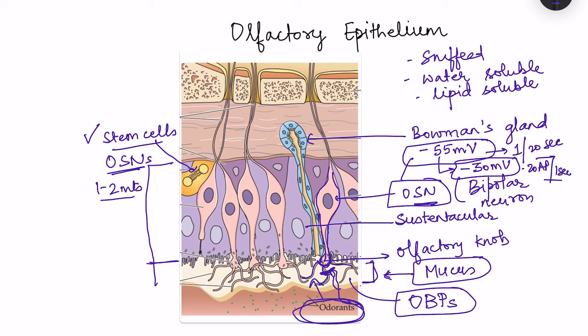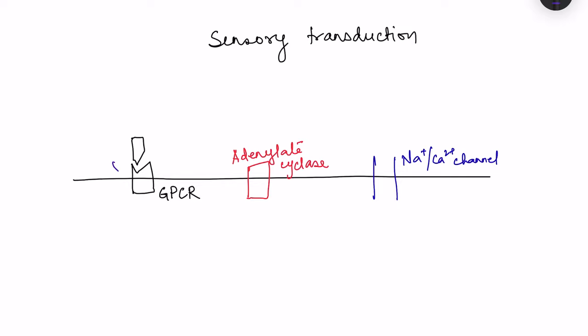The mechanism of sensory transduction involves conversion of chemical energy to electrical energy. The odorant binds to a G protein-coupled receptor on the ciliary membrane. This receptor has three units — G alpha, G beta, and G gamma. When the odorant binds, the G alpha unit separates from the G beta and G gamma units and activates the enzyme adenylate cyclase, also present on the membrane nearby.